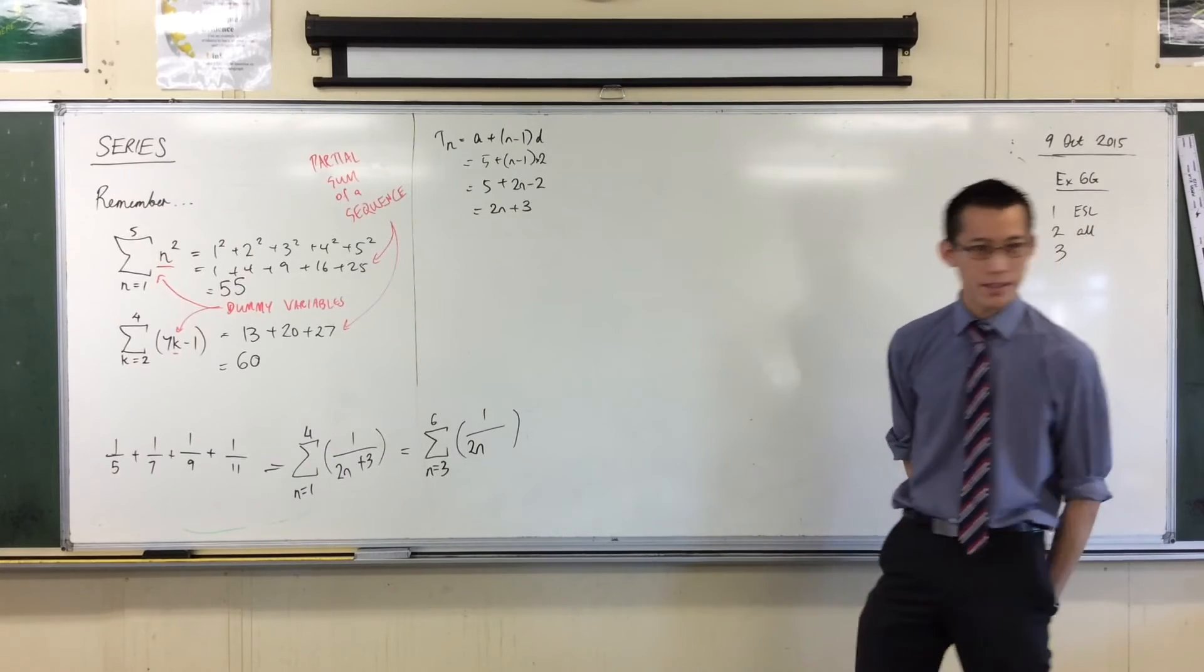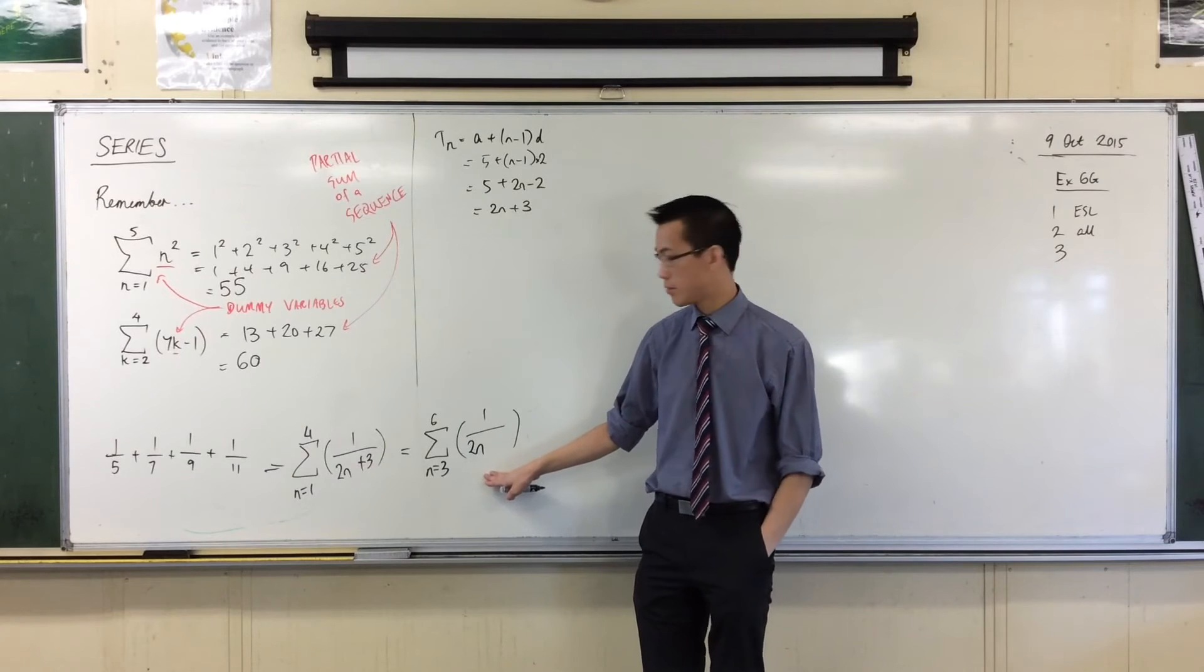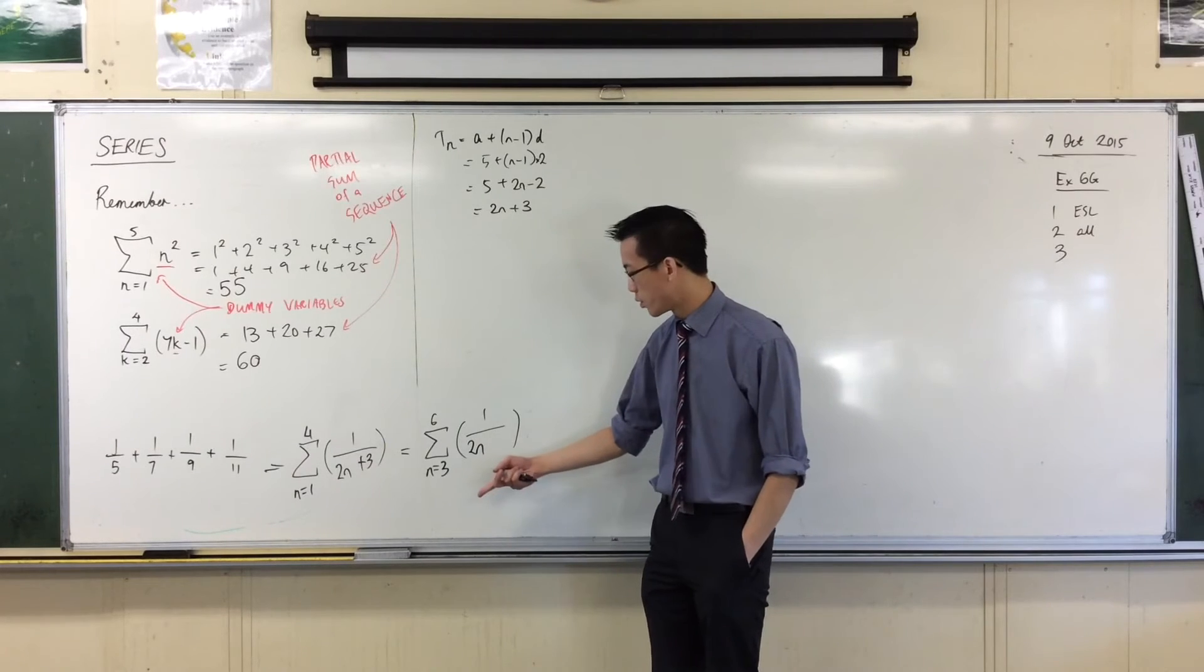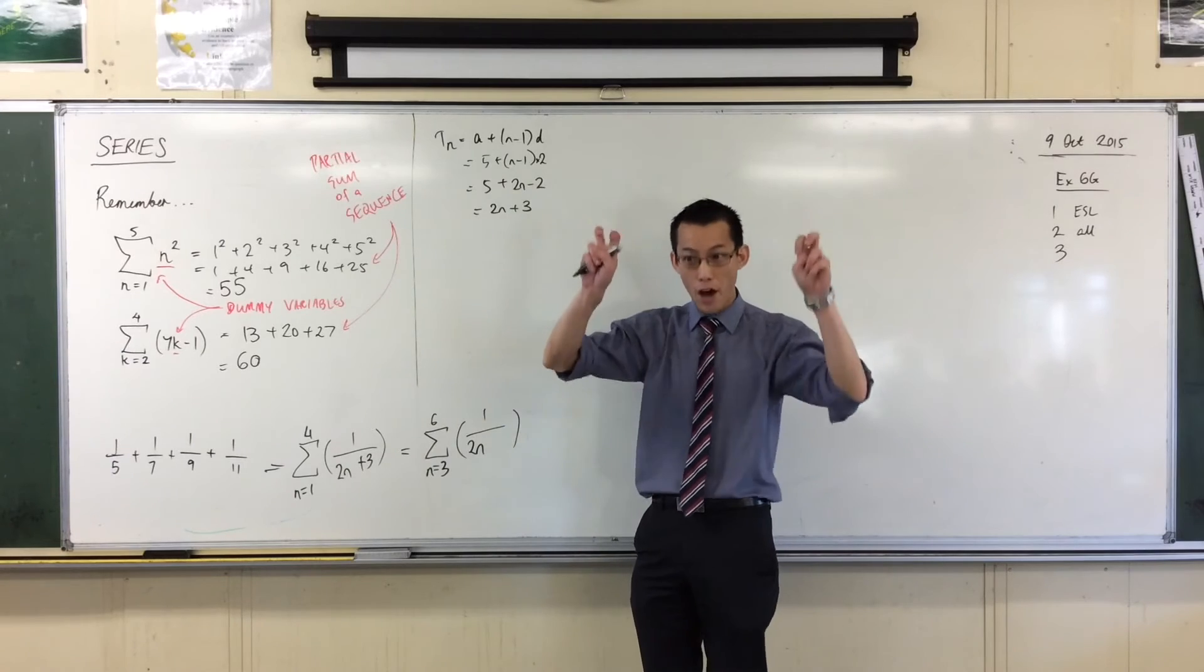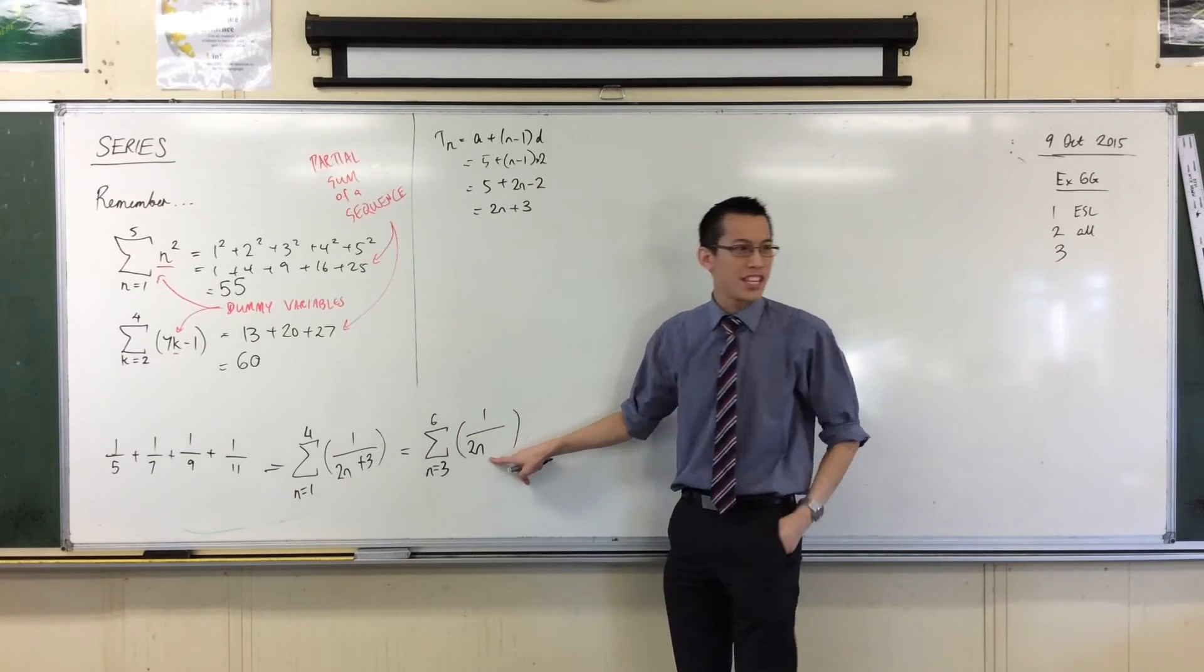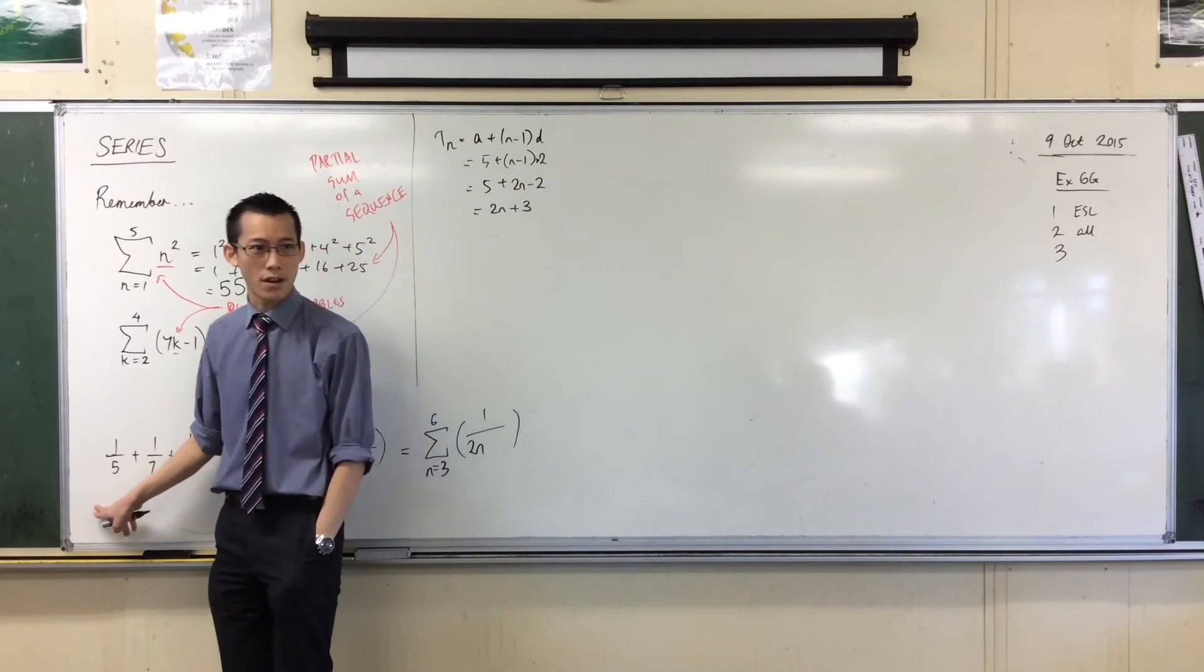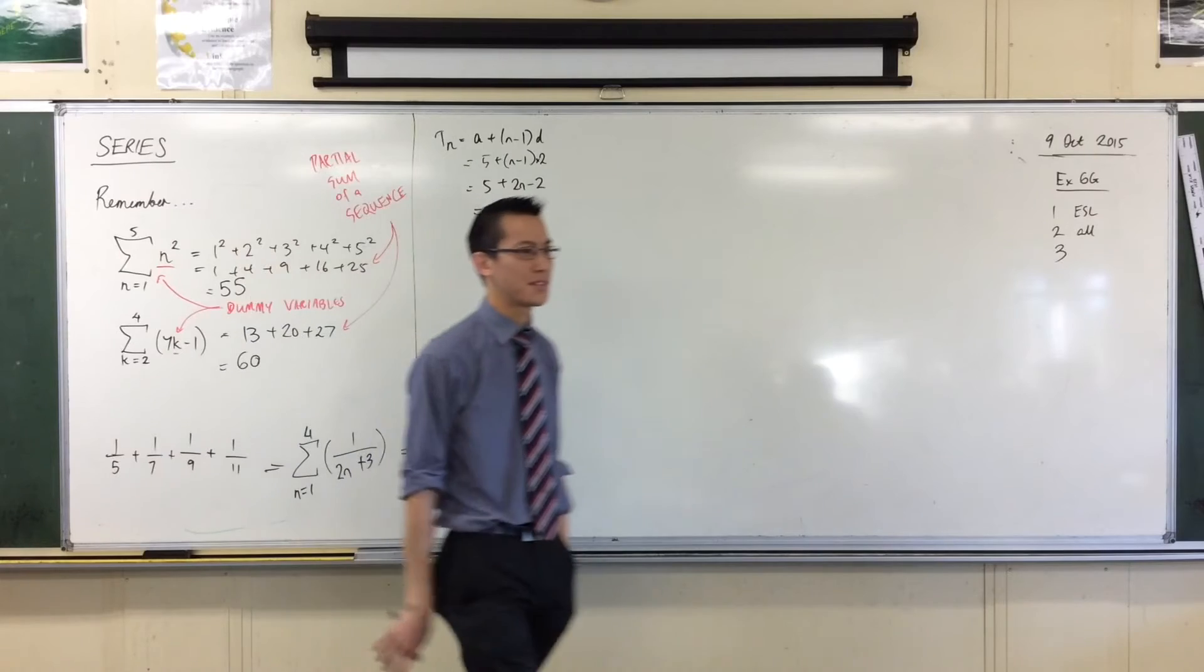Ah, but here comes the difference, right? If I now think about, alright, well, what would my first term be? My first term? Oh, okay. When I put in n equals 3, which is my first term of this partial sum, right? It'll be 6, but I don't want 6 on the denominator. I want 5, don't I? Right? So, how will I adjust 6 to turn into 5? Minus 4, take away 1.